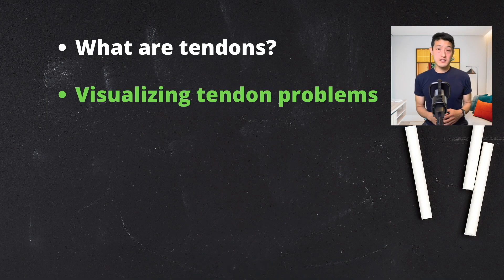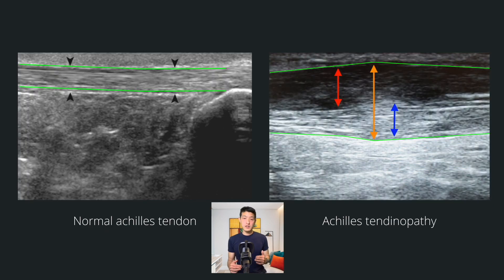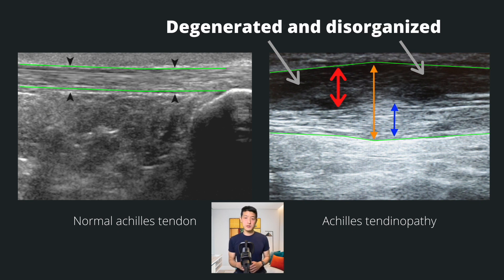We can actually see all of this on a diagnostic ultrasound evaluation. The Achilles tendon is highlighted in green. Each long white line running across the screen is a healthy fiber. Contrast that with this image of Achilles tendinopathy. The orange arrow shows just how thick this tendon is. The blue arrow shows the part of the tendon which is still normal. The red arrow shows the areas of the tendon with tendinosis — the fibers here are much more gray and even black in color. These areas are the degenerated and disorganized fibers, and this is why people are in so much pain.